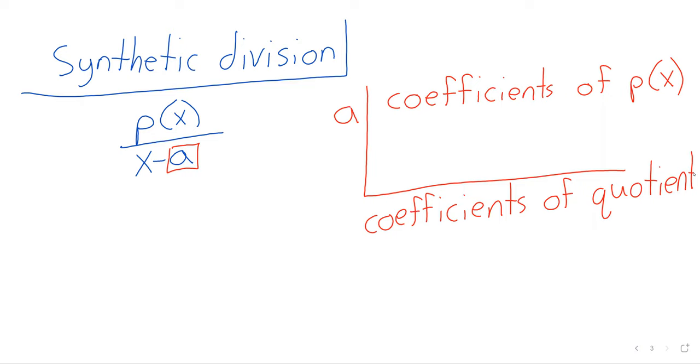And these numbers down here are also going to be coefficients. They are going to be the coefficients of the quotient. When I say the coefficients of the quotient, I mean the coefficients of that polynomial. Let's remind ourselves, or experience for the first time if we weren't here yesterday.